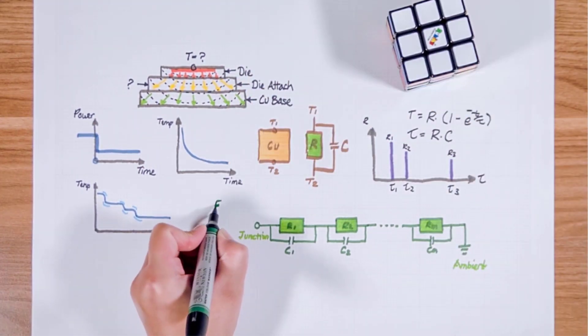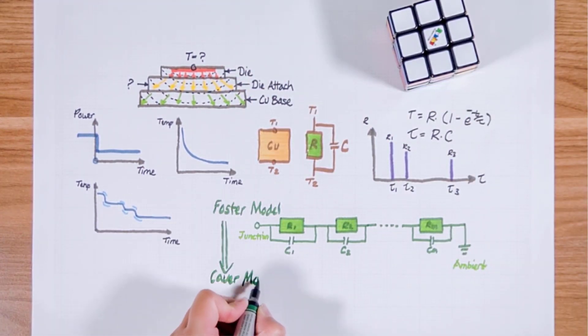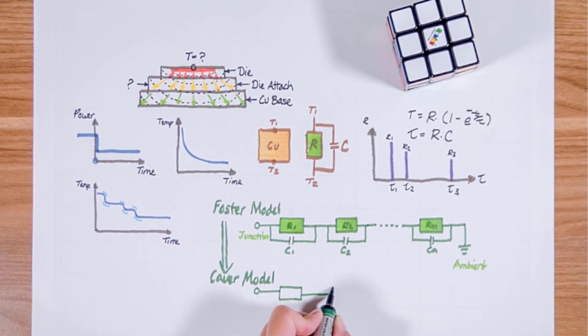To do this the Foster model can be transformed into the Cauer model which carries the same information but can be read as a physical model of the real structure.